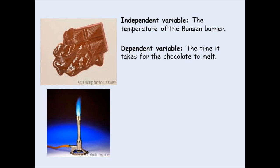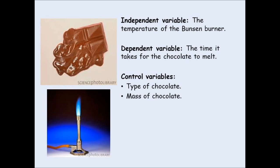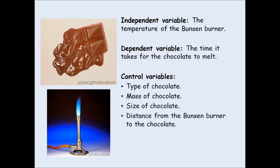You can only say this for sure, however, if any other factor that could affect how long it takes for the chocolate to melt is controlled. Controlled variables therefore include the type of chocolate — whether your chocolate is milk chocolate, dark chocolate, white chocolate, whether it was made by Mars or Cadbury's. These factors could affect how long it takes to melt, therefore it needs to be controlled. You would need to have the same bar of chocolate at each temperature. The mass of the chocolate needs to be the same, because that could also affect how long it takes to melt, as could the size or surface area of the chocolate, and also the distance from the heat source — in this case the Bunsen burner — to the chocolate. If the Bunsen burner is closer in one of the investigations, that wouldn't be fair, because that distance might affect your results.